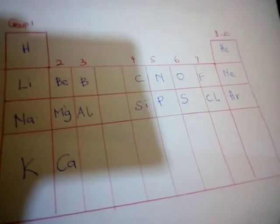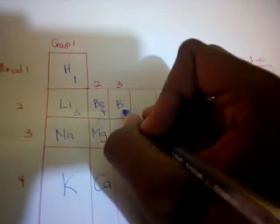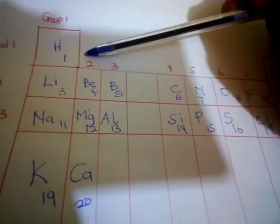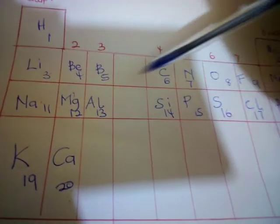Now we have to write their atomic numbers to help us find the valence electrons. It's simple — all you have to do is put 1, 2, 3 in front of each of them. So hydrogen gets 1, helium gets 2, then lithium 3, beryllium 4, boron 5, carbon 6, and continuing all the way through. So hydrogen has atomic number 1, helium 2, lithium 3, beryllium 4, boron 5, carbon 6, and so on up to calcium at 20.